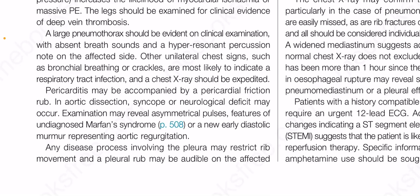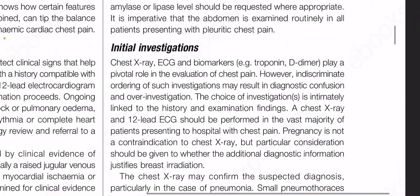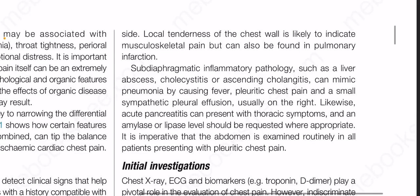Pericarditis may be accompanied by a pericardial friction rub. In aortic dissection, syncope or neurological deficit may occur. Examination may reveal asymmetrical pulses, features of undiagnosed Marfan syndrome or a new early diastolic murmur representing aortic regurgitation. Any disease process involving the pleura may restrict rib movement and a pleural rub may be audible on the affected side. Local tenderness of the chest wall is likely to indicate musculoskeletal pain but can also be found in pulmonary infarction.